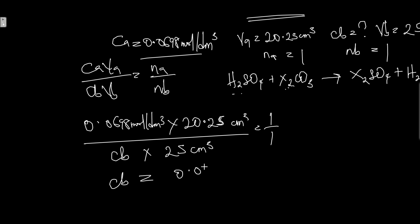we have 0.0698 mol/dm³ times 20.25 cm³ over 25 cm³. Your final answer becomes 0.0565 mol/dm³ as the concentration of BN.